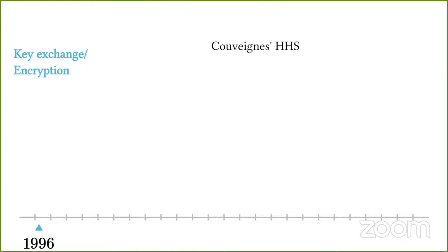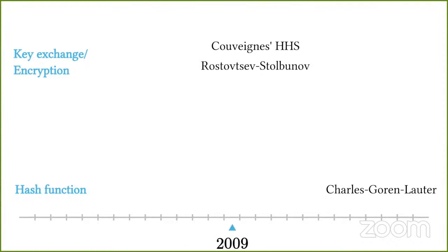C-side is a direct descendant of the very first isogeny-based schemes, the family of schemes based on the hard homogeneous basis framework of Couvaine. Then, Charles, Goren and Lauter introduced supersingular isogeny graphs in cryptography. Rostovtsev and Stolbunov rediscovered Couvaine's scheme. The SIDH key exchange only came some years later and is currently the only isogeny-based candidate in the third round of NIST's post-quantum competition, under the name SIKE.